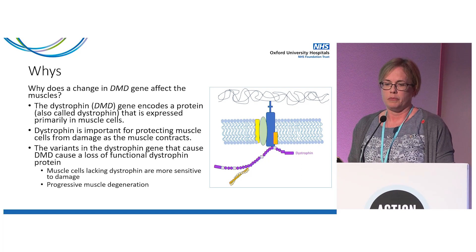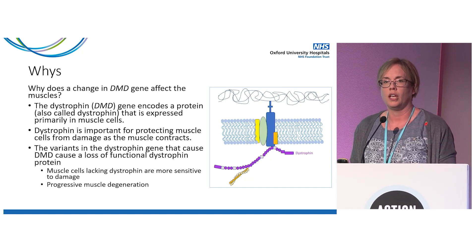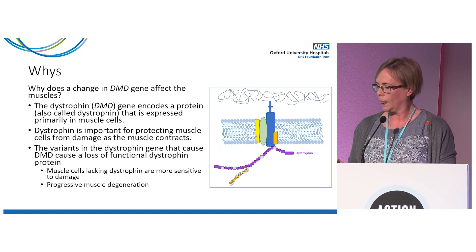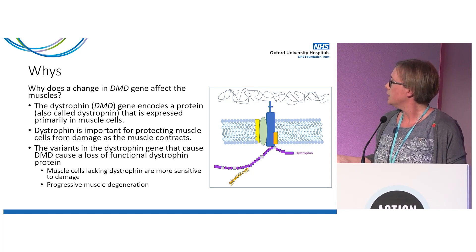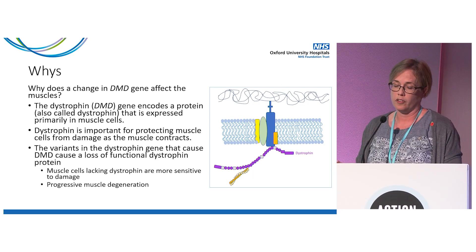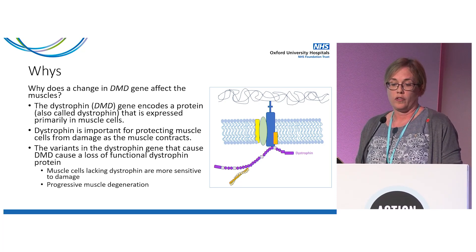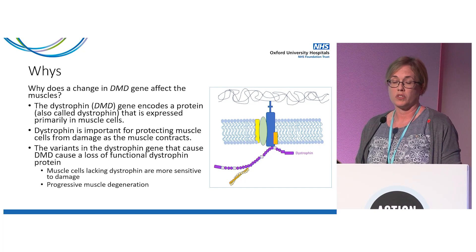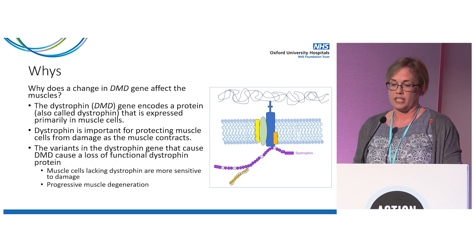Why does a change in the DMD gene affect the muscles? The dystrophin gene encodes a protein also called dystrophin, which is expressed primarily in muscles. It links the actin cytoskeleton with a complex of proteins in the muscle cell membrane that link to the extracellular matrix. This linking is important for protecting muscle cells from damage as the muscles contract and relax. Variants in the dystrophin gene that cause Duchenne result in a loss of functional protein, making muscle cells more sensitive to damage and causing progressive muscle degeneration.